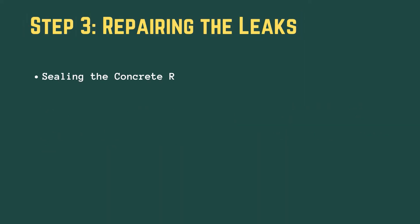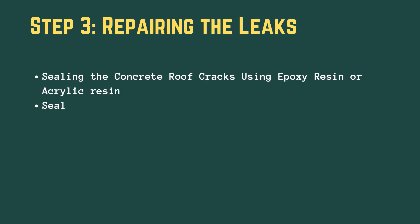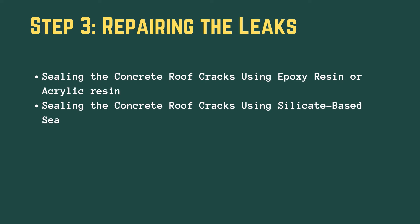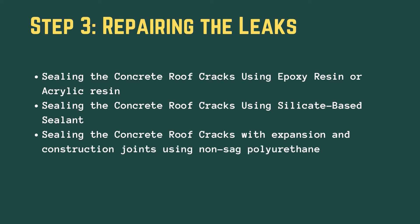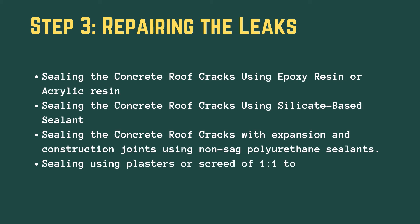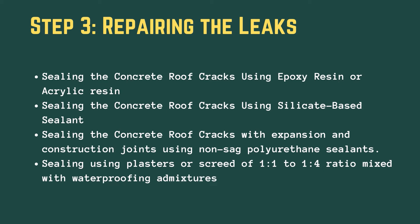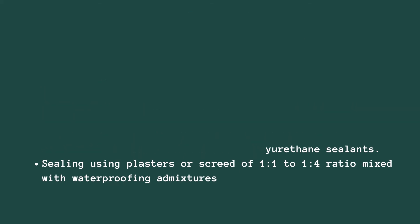Method 2: Sealing the concrete roof cracks using epoxy resin or acrylic resin. Method 3: Sealing the concrete roof cracks using silicate-based sealants. Method 4: Sealing the concrete roof cracks at expansion and construction joints using non-sag polyurethane sealants. Method 5: Sealing using plasters or screed in a 1:1:4 ratio mixed with waterproofing admixtures.